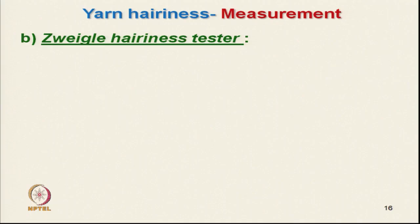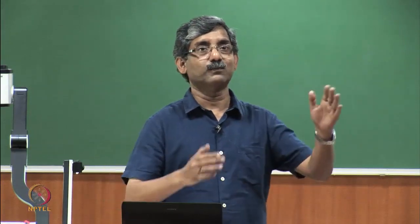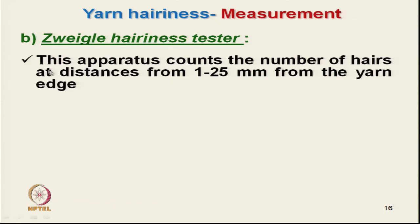The next method is the Zweigel hairiness tester. Its principle is exactly the same as the Shirley hairiness tester, but the main problem with the Shirley tester is that it can only give data for one hairiness setting at a time. If we want to test for hairs of 3 millimeters and above, that requires one test; for 4 or 5 millimeters, we need repeated testing. The Zweigel method gives the total range of hairiness lengths in a single test.